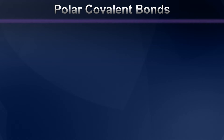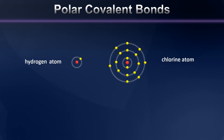Now let's consider what happens when we have a covalent bond between two different elements. I'm going to use hydrogen and chlorine as an example. Let's first look at the Bohr model of the hydrogen atom. Of course hydrogen only has one principal energy level and one electron in it, so the hydrogen atom would be said to have one valence electron. Now that's only one electron away from a full valence shell — remember, the first principal level can only hold two.